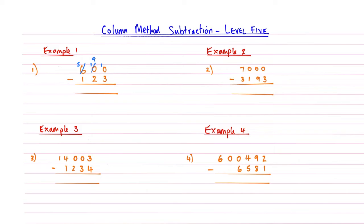So now we have a 10 here. So 10 subtract 3, that gives me an answer of 7. And then the tens column 9 subtract 2 gives me an answer of 7 again. And then the hundreds column 5 subtract 1, that gives me 4. So the answer to example number 1 is 477.